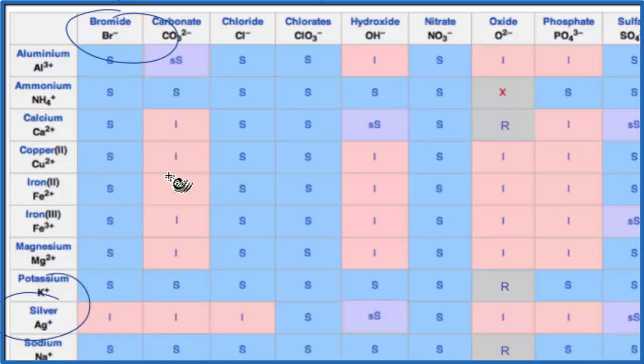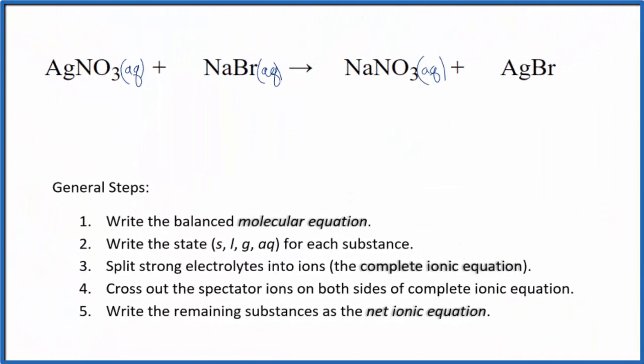That means that it will not dissolve in water. So when this reaction takes place, we'll have the silver nitrate and the sodium bromide reacting. They'll produce sodium nitrate, but the silver bromide, it'll be a solid. It won't dissolve, so it'll precipitate out, fall to the bottom of the test tube. Because of that, we write S for solid after it.